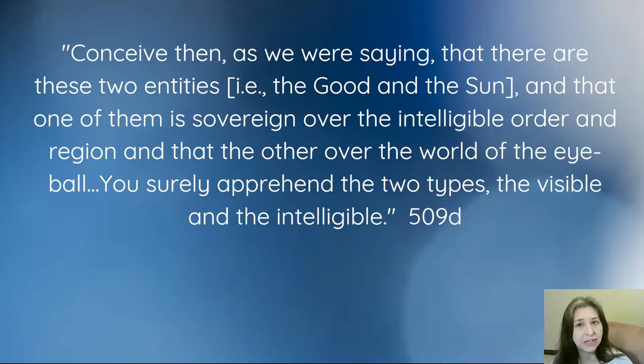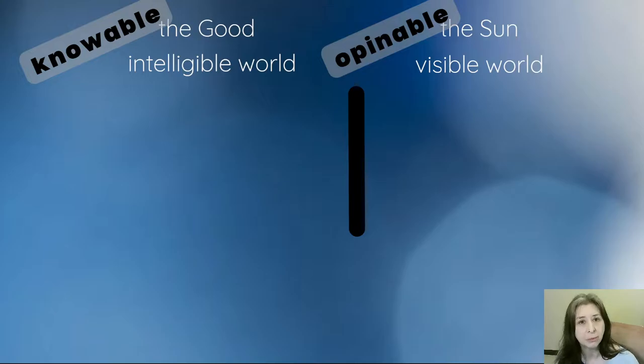Socrates says, conceive that there are these two entities, the good and the sun, and one is sovereign over the intelligible order and region, and the other is sovereign over the world of the eyeball. You surely apprehend the two types, the visible and the intelligible. So we can make a separation of these two sections. The good is sovereign over the intelligible world, the sun is sovereign over the visible world. When the soul is focused on the intelligible world, the objects there are knowable.